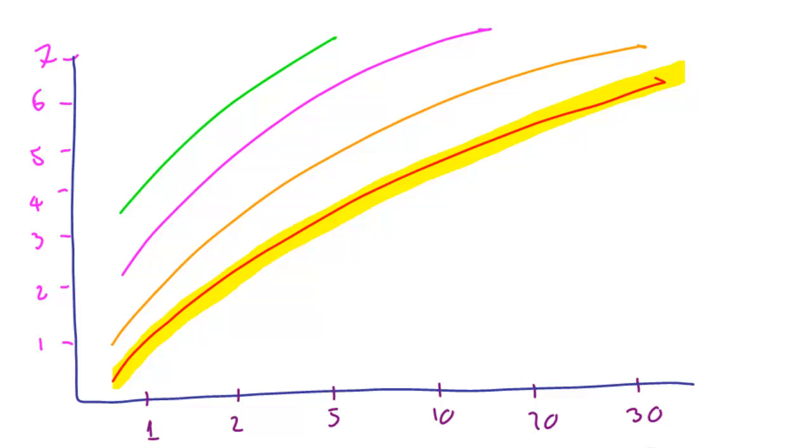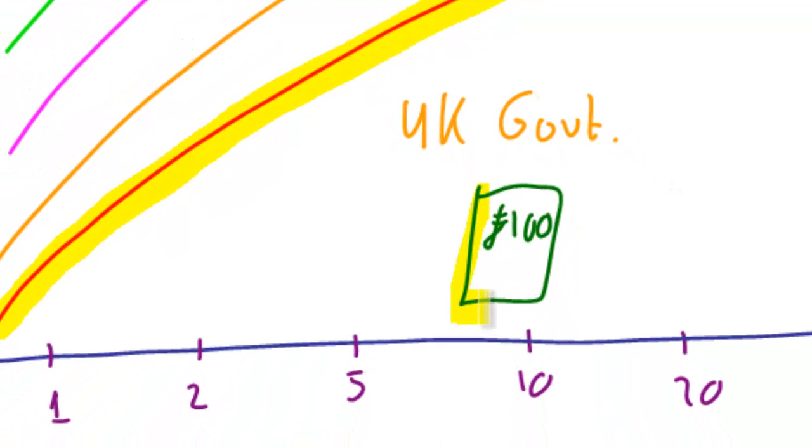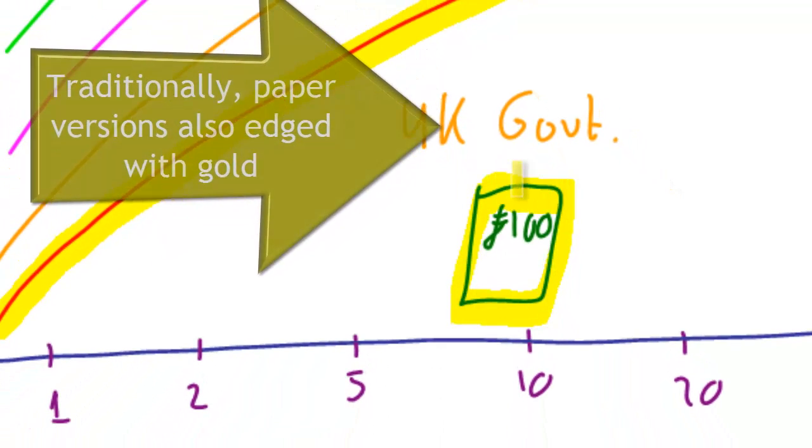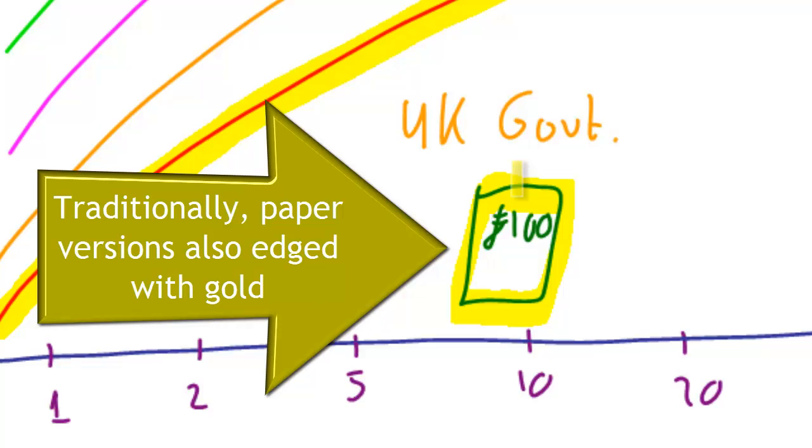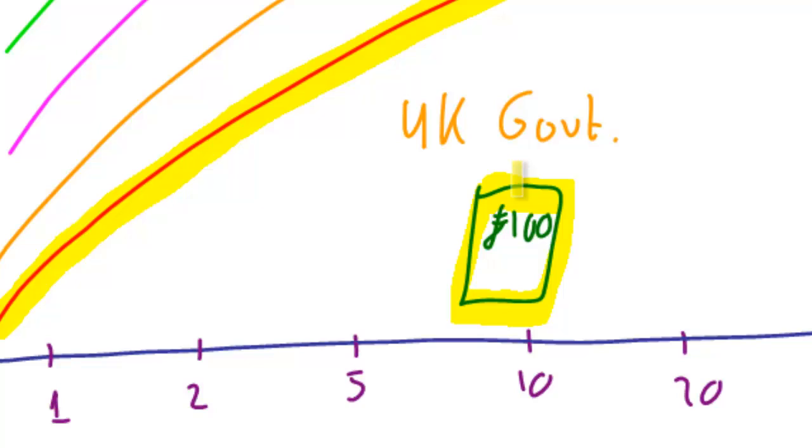We just need to explain why that one's called the riskless yield curve. Let's say we go to the UK government. The UK government will issue a series of bonds called gilts, and that will be in pounds. The reason they're called gilts is in the good old days, they used to be backed by gold. It used to be four pounds was an ounce of gold. So you took your four pounds down to the Bank of England, and they would give you an ounce of gold in return. That's why they're called gilts.